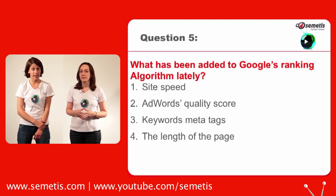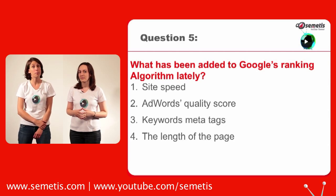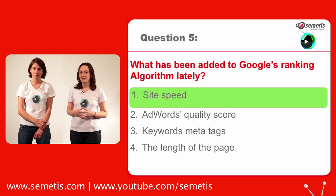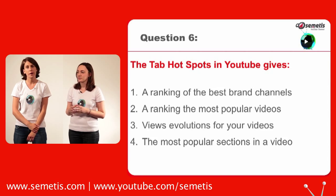Question five: what was lately added to Google's ranking algorithm? Site speed, AdWords quality score, keywords, meta tags, or the length of the page? The answer is site speed.